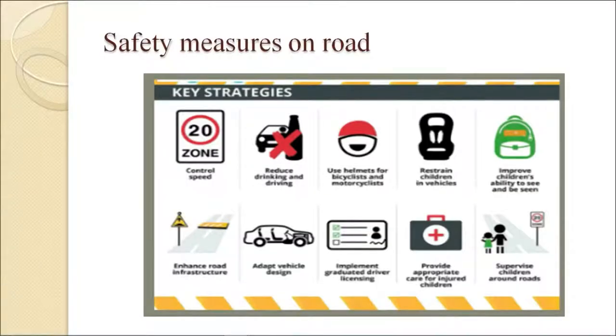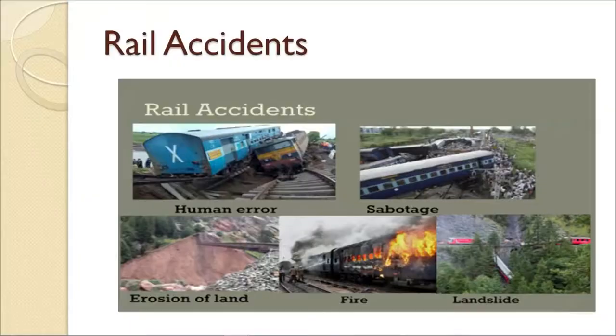Here are some road safety measures shown in the figure. It shows a few safety measures for road safety: control speed, reduce drinking and driving, use helmets for bicyclists and motorcyclists, restrain children in vehicles, improve children's ability to see and be seen, enhance road infrastructure, adapt vehicle design, implement graduated driver licensing, provide appropriate care for injured children and supervise children around roads.